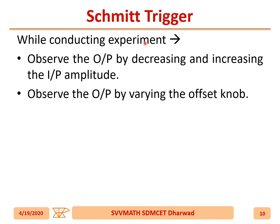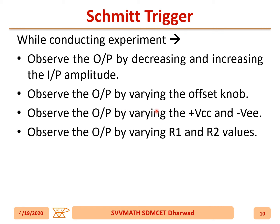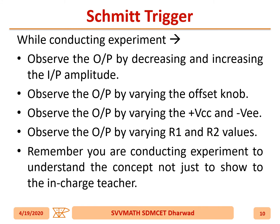While conducting the experiment, observe the output by decreasing and increasing the input amplitude. Observe the output waveform by varying the offset knob. Also observe the output by varying plus V_CC and minus V_EE, and by varying the R1 and R2 values.